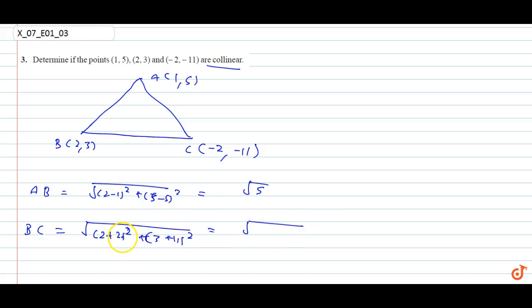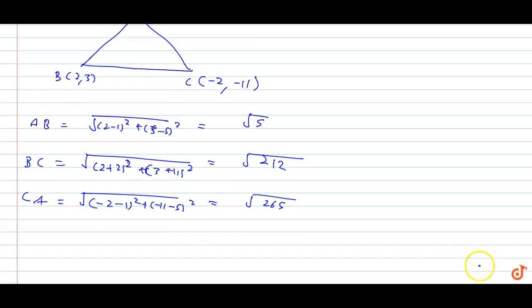= √(16 + 196) = √212. And CA will be √((-2-1)² + (-11-5)²) = √265. Since AB + BC is not equal to CA, this implies points A, B, C are not collinear.